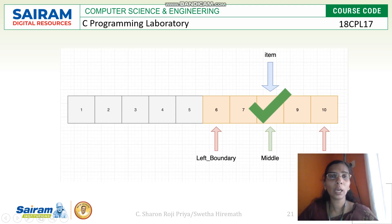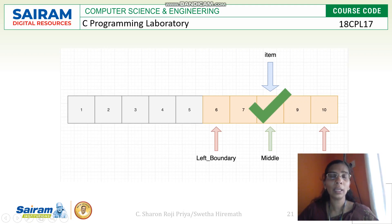Array index starts from 0. Your first index will be 0, 1, 2, 3, 4, 5, 6, 7, 8, 9, and the last index will be 9.